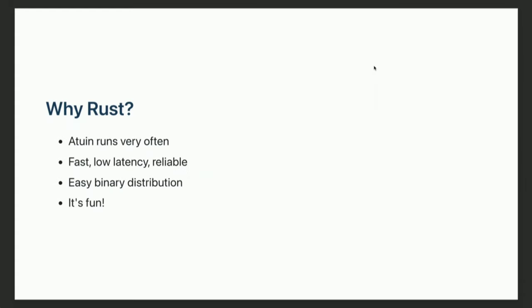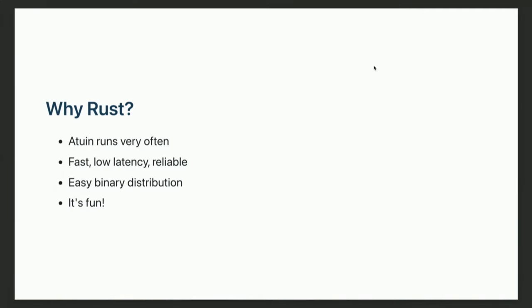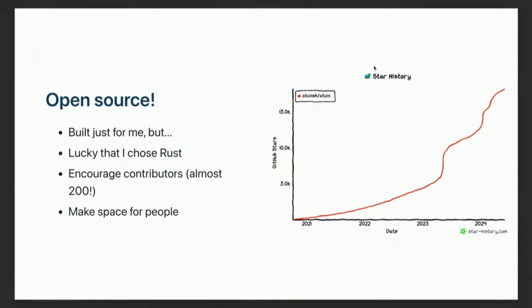So, why Rust? Atuin runs very often — before and after every command in the user's shell — so it needs to be fast, low latency, and reliable. If we're adding 50 milliseconds to every command you run, to quote a blog I like: it's going to feel like I'm putting lead in your shoes. If we're throwing exceptions left and right, that's a quick way to get uninstalled. Another benefit of Rust is that binary distribution is very easy — it's almost entirely statically linked, so users don't need to install an interpreter or shared libraries. And finally, the least and most important reason: it's fun. When I started this project it was in my free time, after work, and I'd spent all day writing Go and didn't want to come home and write the same language.